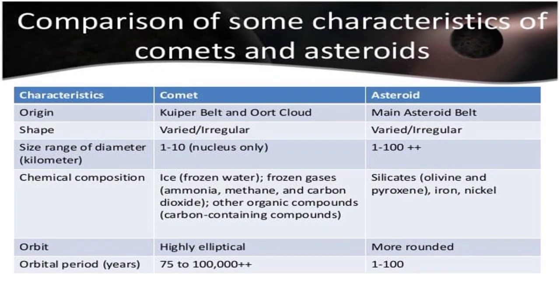To know more about comets and asteroids, let us have a comparison on some characteristics of them in terms of origin, shape, size range of diameter, chemical composition, orbit, and their orbital period.